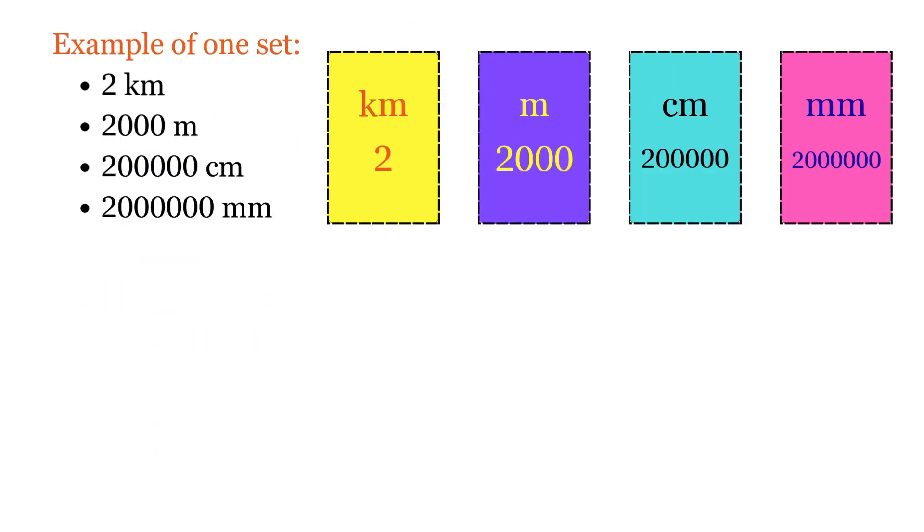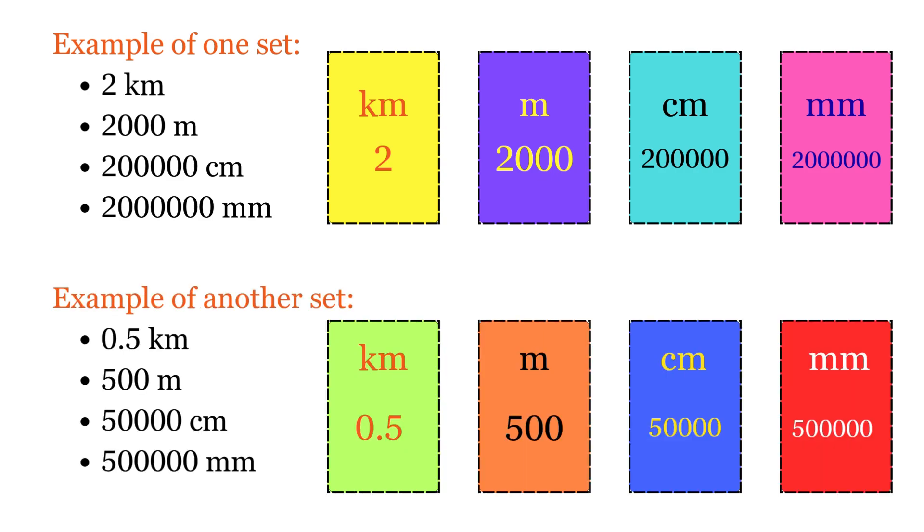Example of one set is 2 kilometers, 2000 meters, 2 lakh centimeters, and 20 lakh millimeters. Example of another set is 0.5 kilometers, 500 meters, 50,000 centimeters, and 5 lakh millimeters. I have made the cards colorful to make the game more attractive and fun.